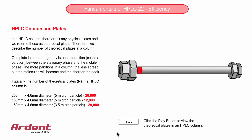The size of the particle of the stationary phase is typically about 5 microns, and a typical length of the HPLC column is about 250mm long. If the length of the column is shortened, then the plate count is shortened proportionately.